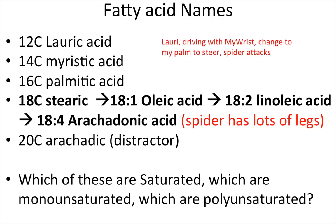Fatty acid names — fatty acids are categorized by the number of carbons they have, and each carbon you add gives a new name to the fatty acid. Starting at 12 carbons is lauric acid. I don't want you to stress about memorizing all of this — I've bolded what's most important. There's also a little mnemonic here to help if you want to commit these names to memory.